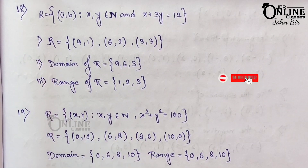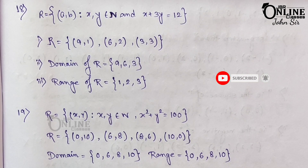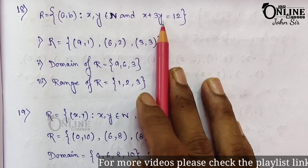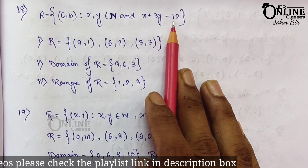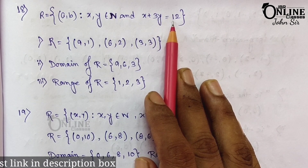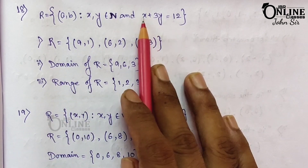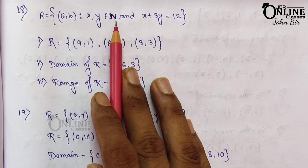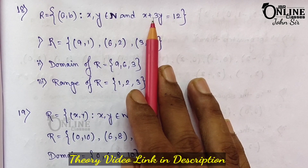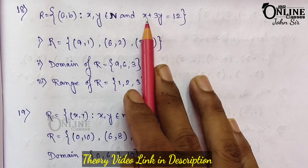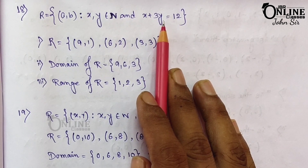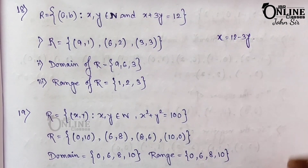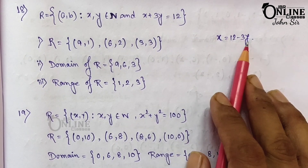In sum number 18, let R be the relation on N defined by R = {(x,y)} such that x,y belongs to N (natural numbers) and x + 3y = 12. First, list the elements of R. The given condition is x + 3y = 12, so x = 12 − 3y. The value of x depends on y.